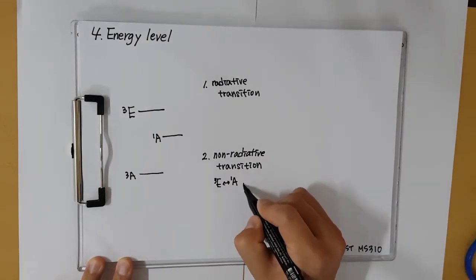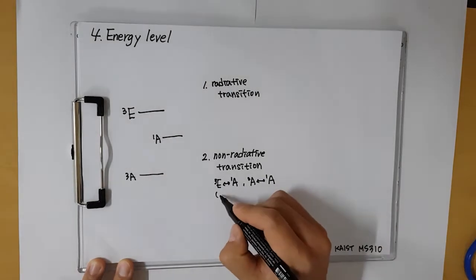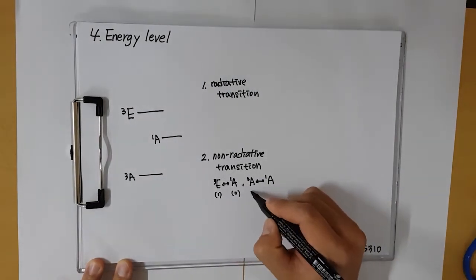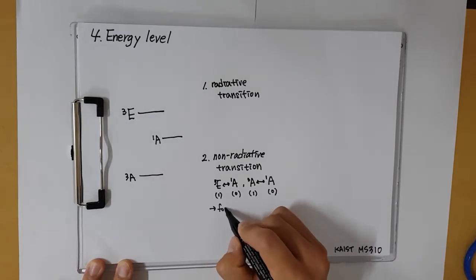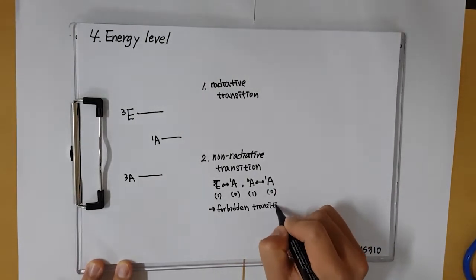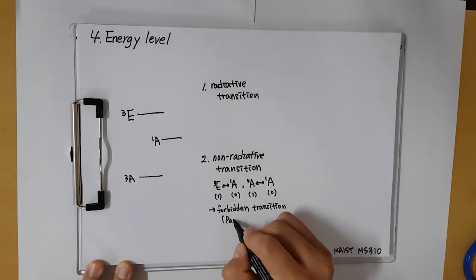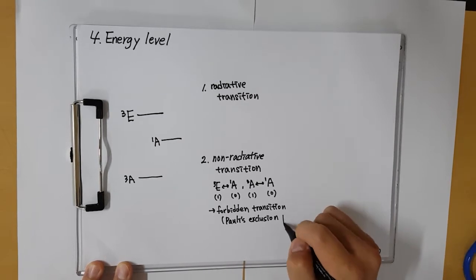These transitions are forbidden transitions because by the Pauli exclusion principle, the same spin electrons cannot occupy the same quantum state. However, it takes a short time in macroscopic world while almost eternal time in microscopic world, so it could be happened.